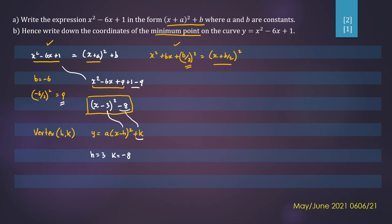So let's write down our expression as y equals x minus 3 all squared minus 8. And our vertex is going to be 3, negative 8.